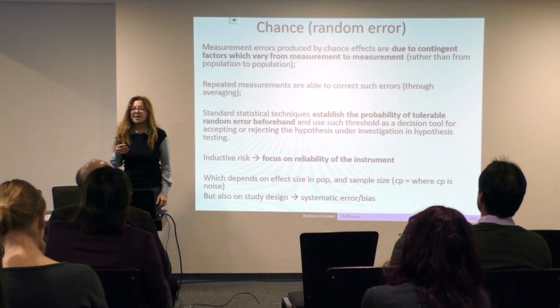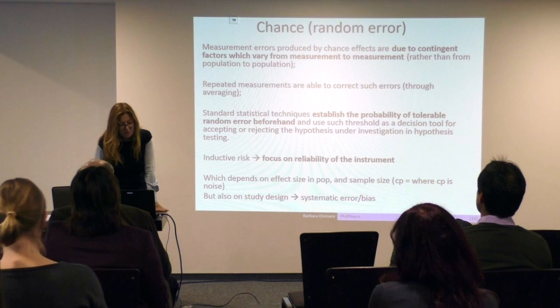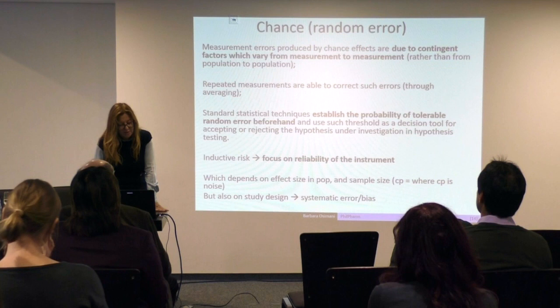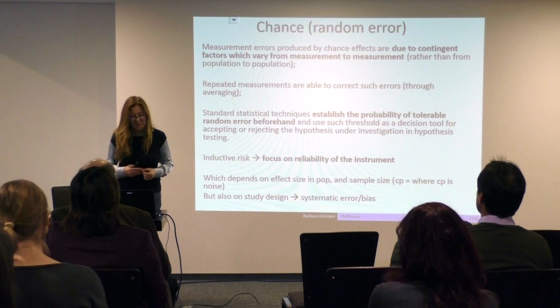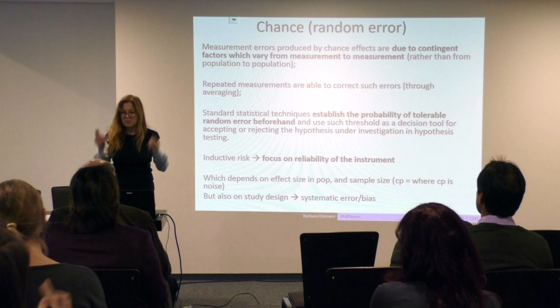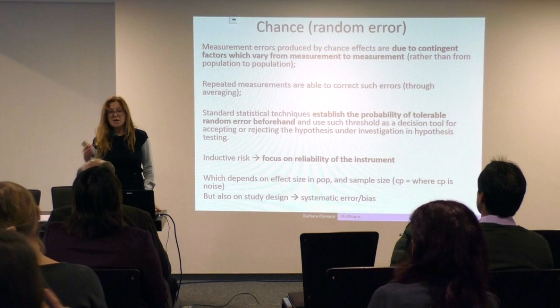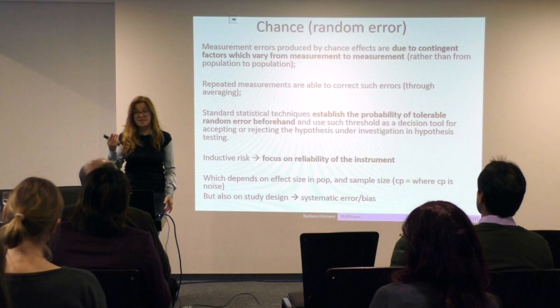Let's think about random error. Measurement errors produced by chance are due to contingent factors which vary from measurement to measurement rather than from population to population, and large measurements are able to correct such errors through averaging. Some statistical techniques establish a threshold of tolerable random error beforehand and use this threshold as a decision tool for accepting or rejecting the hypotheses under investigation. Given this threshold — and this is categorical — then you have a great inductive risk, because you decide with one experiment in principle. The focus is really on reliability of the instrument. Reliability is not only about random error in the long run, but also about systematic error.